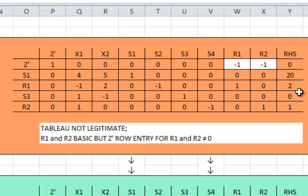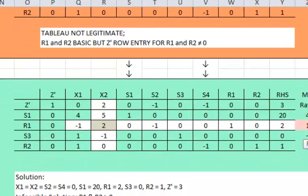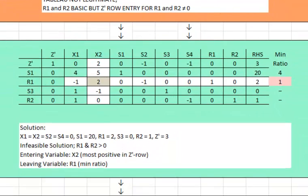Again, the same approach that we have taken before. We are going to write the first tableau, which is going to be a not-legitimate one because we will have under R1 and R2 in the Z prime row values. We are going to multiply the R1 row by 1 and add it to the Z prime, and we are going to multiply R2 row by 1 and add it to the Z prime. You can do that both at the same time or you can do that separately.